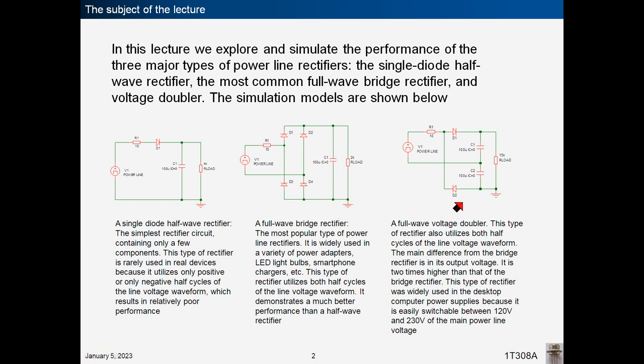A full wave voltage doubler also utilizes both half cycles of the line voltage waveform. The main difference from the bridge rectifier is in its output voltage — it is two times higher than that of the bridge rectifier. This type of rectifier was widely used in desktop computer power supplies because it is easily switchable between 120 and 230 volts of the main power line voltage.